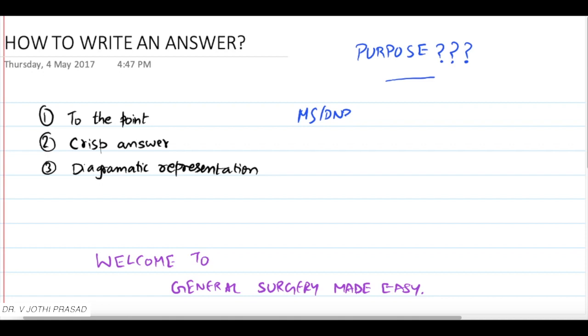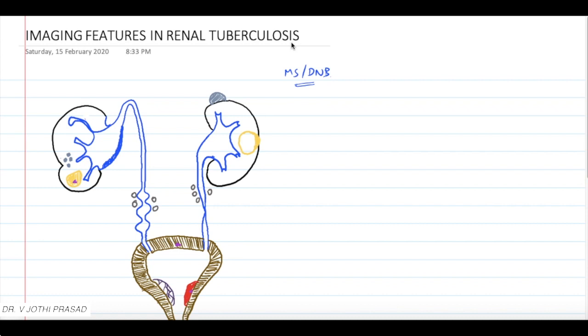How to answer any question asked in an MS or DNB examination? Just keep three points in mind: always answer to the point, your answer should be crisp, and diagrammatic representation will always have a positive advantage over any others.